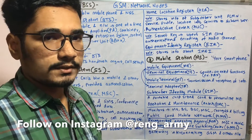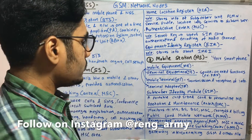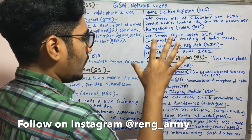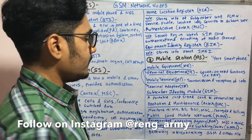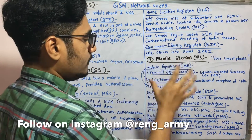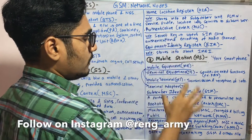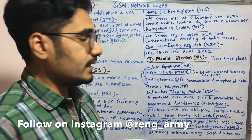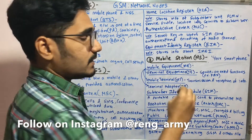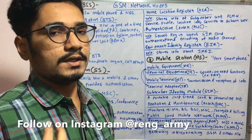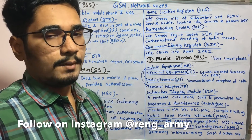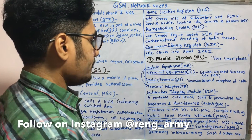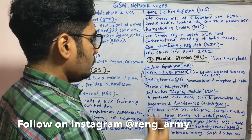Then there is the OMC — Operation and Maintenance Center. It basically monitors all the components inside the GSM system: it monitors the MS, BS, BSC, and MSC. It also manages certain charges and billing for prepaid or postpaid users.